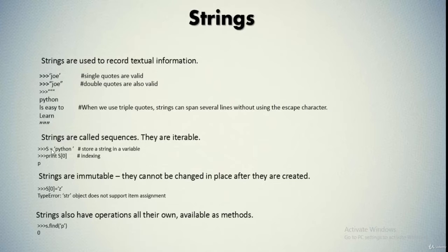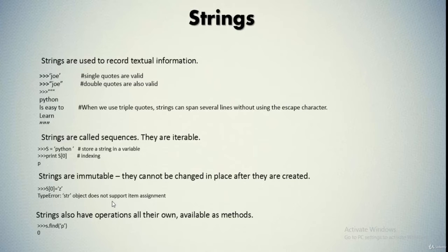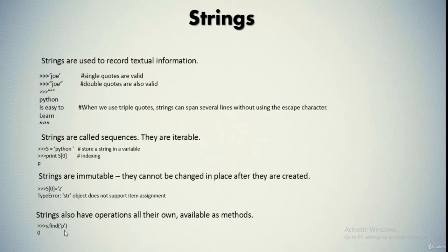Once you have specified S contains 'Python', the zeroth index of S would contain P. If you try to change the zeroth index value and replace it with Z, it will give an error which states 'str object does not support item assignment', which means strings are immutable — you cannot replace those values once they have been assigned. There are also various other operations and methods available which we can apply over strings. We'll look at them in our next slide.